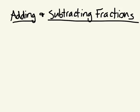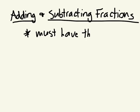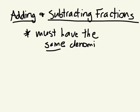When you're adding and subtracting fractions, you must have the same denominator. So the denominators must be the same. If they're not the same, you have to make them the same — you have to find a common denominator.